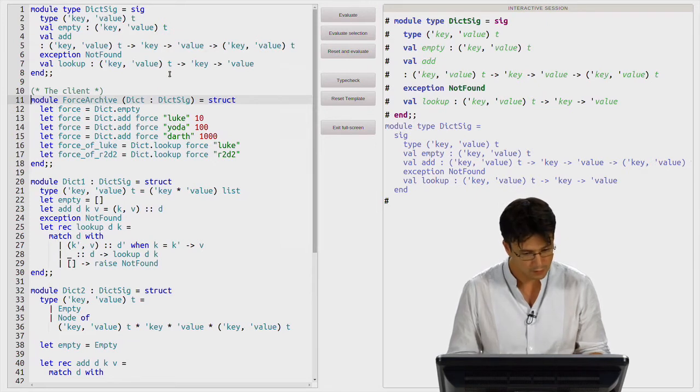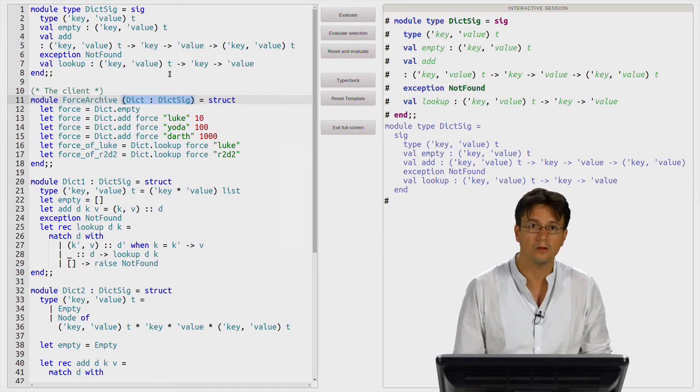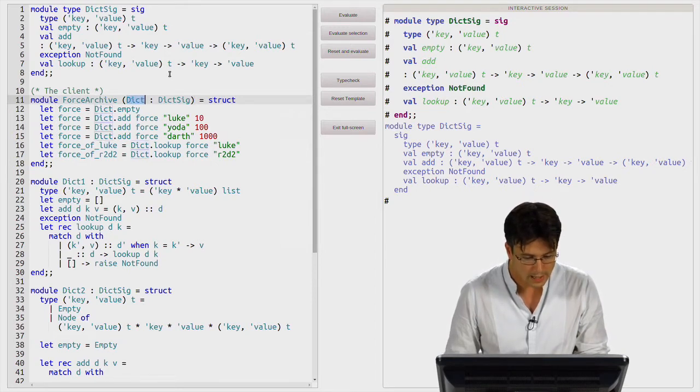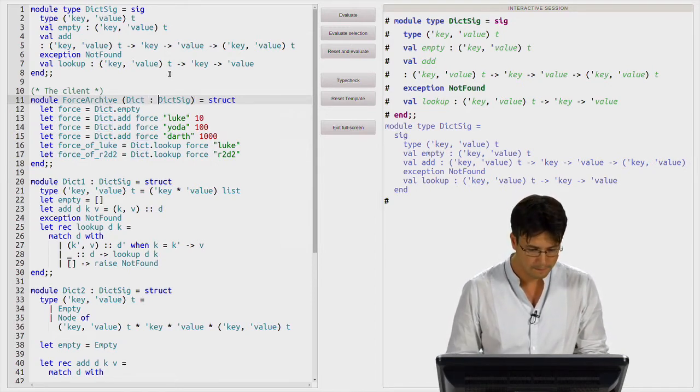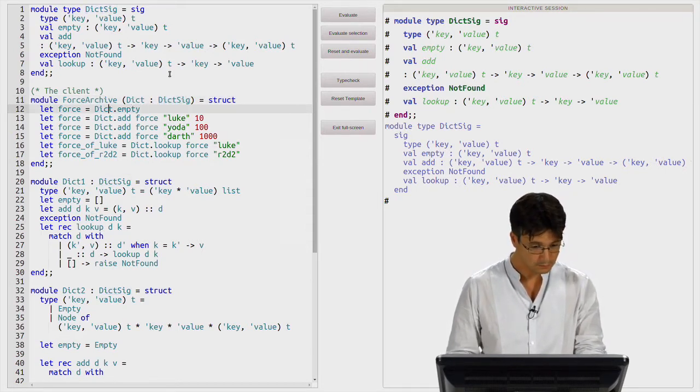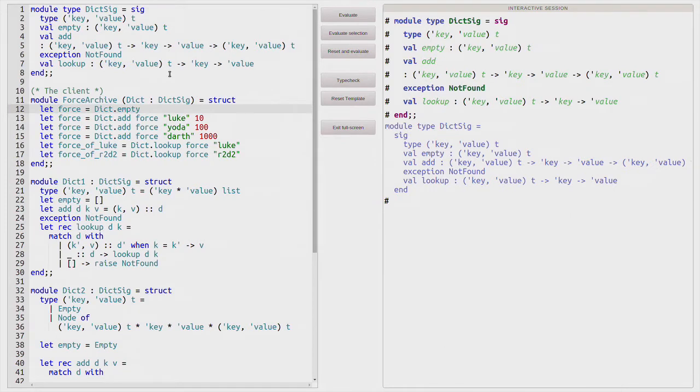We introduce a functor, which means that in the code, we add an argument. But this argument takes, not a value, but a module dict, here. And we provide the signature for this module.